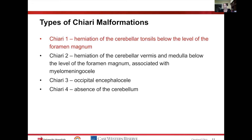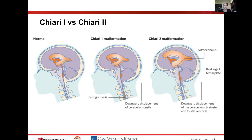For the purpose of this lecture, we're going to talk predominantly about the Chiari 1 malformations. Chiari 2s, because of their association with myelomeningocele, are treated a little bit differently than Chiari 1s. Comparing the most common types, Chiari 3s and Chiari 4s are fairly rare.